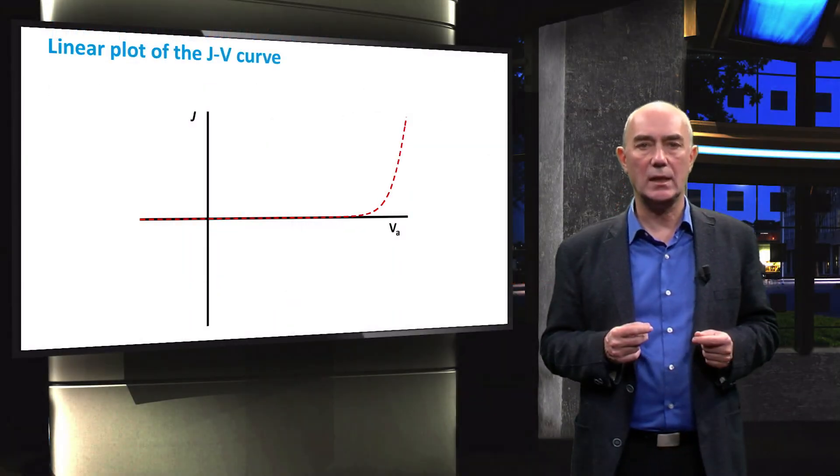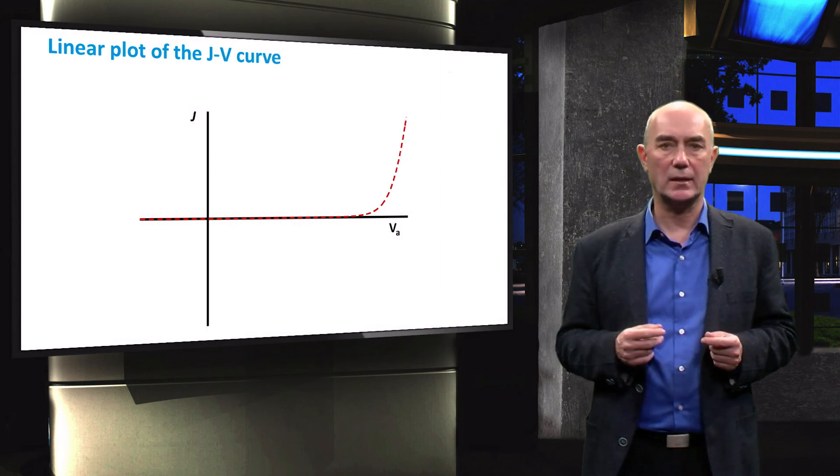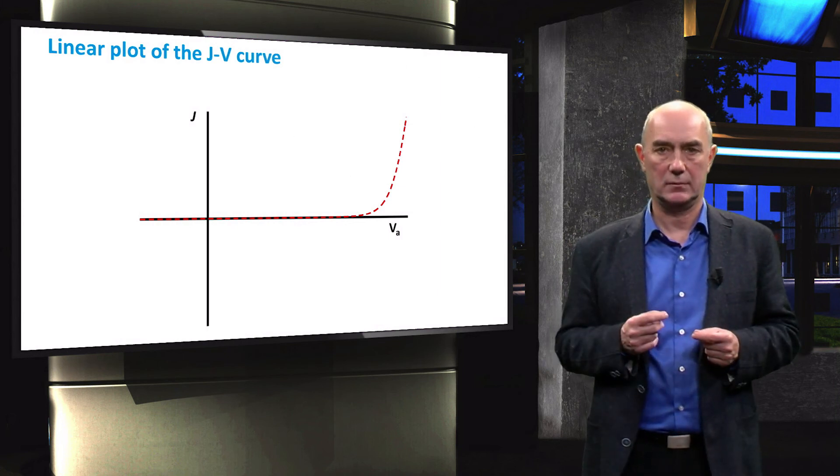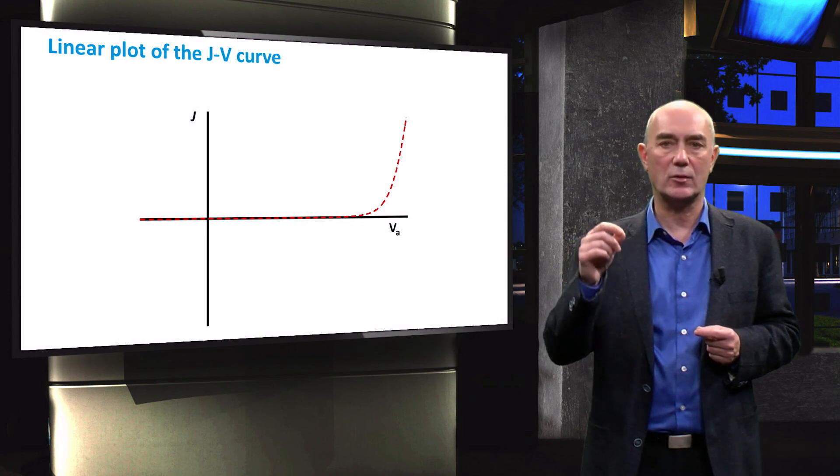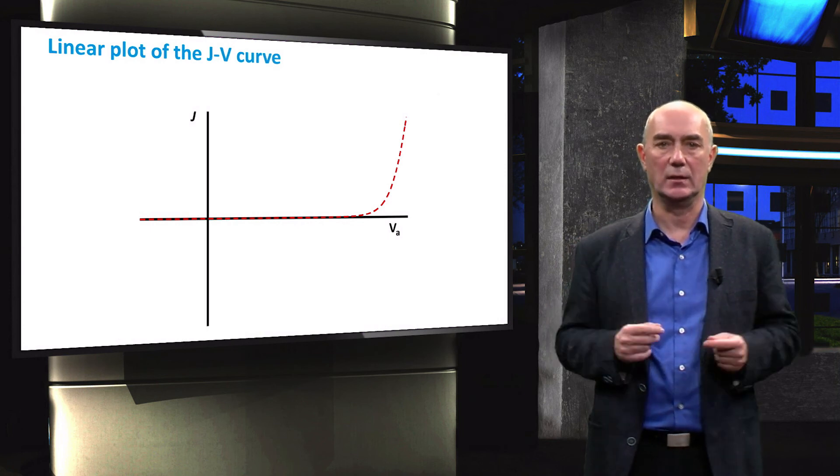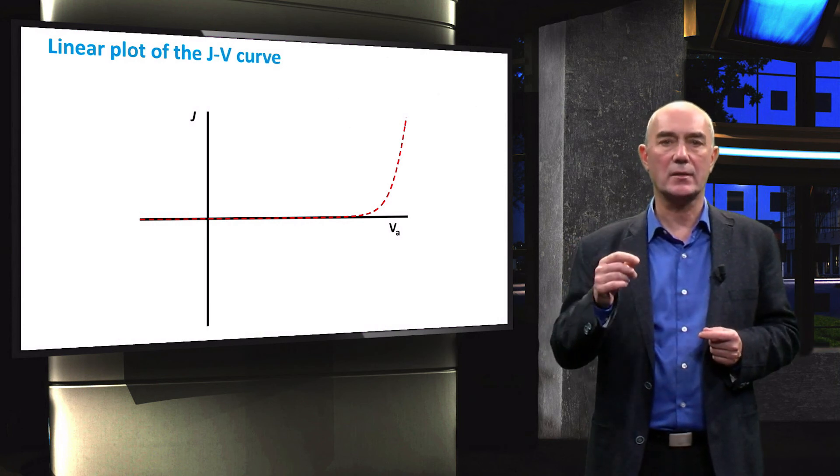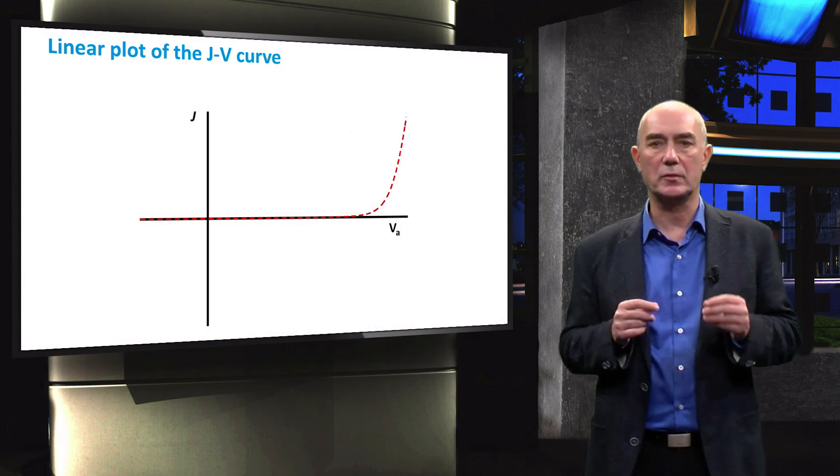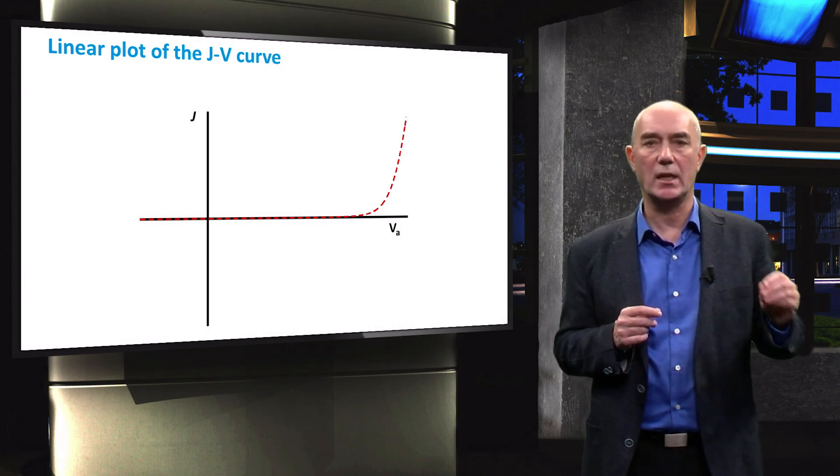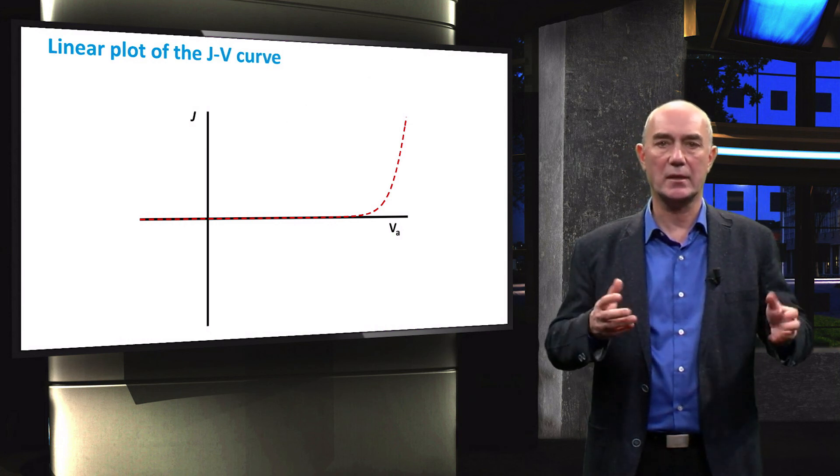It is good to see what a dark JV curve looks like in a linear plot. You will likely see it represented this way as well. Here you can see that it is very difficult to discern the negative current density, J0, in the reverse bias region.